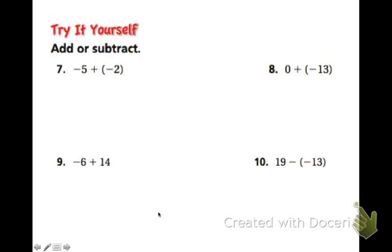So in trying it for yourself, we have two negatives that we are adding, so we actually get to add the absolute values, and the answer would be negative 7 because you keep the negative sign. In number 8, 0 plus the negative 13. In this case, it's like the identity property of addition. Anything plus 0 is itself, so the answer would be negative 13.